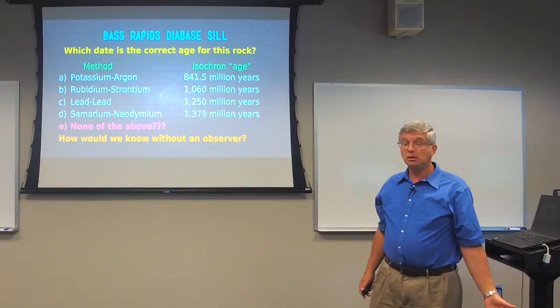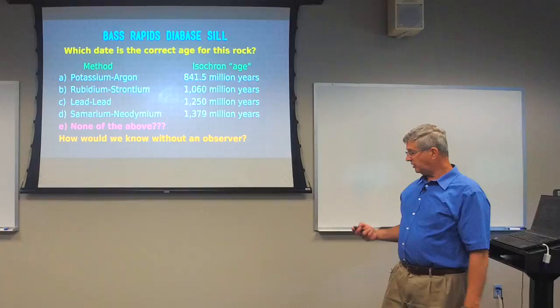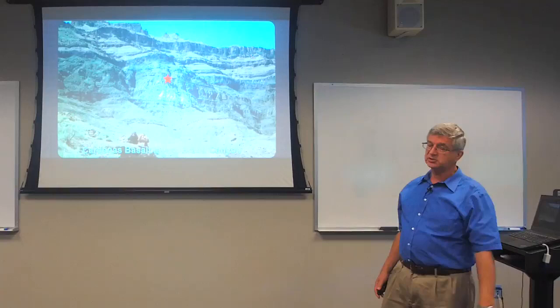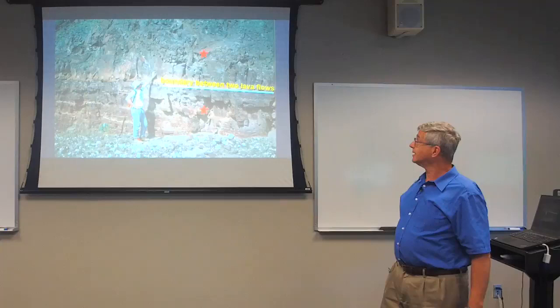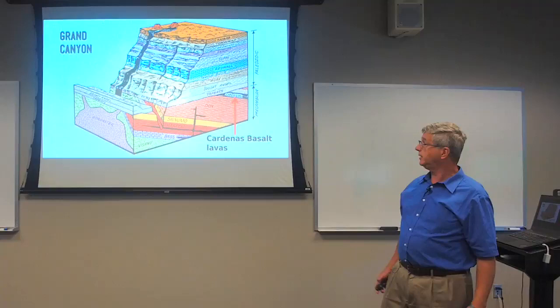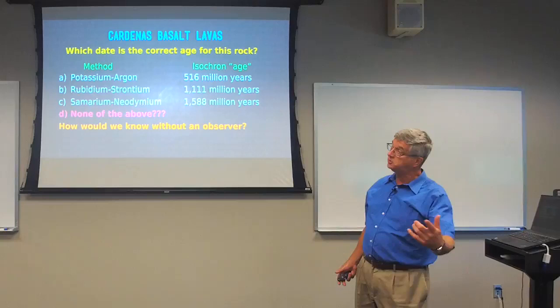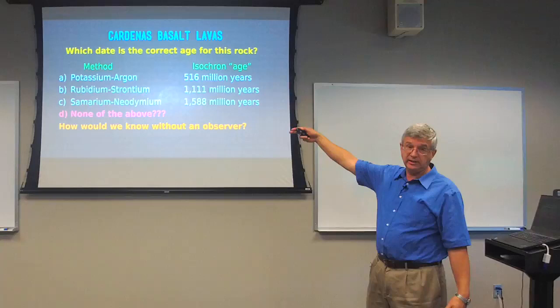Moving on to the Cardenas basalt lava flows — a succession of about six or seven flows in the Precambrian. Here are the results: potassium-argon 516 million years, rubidium-strontium 1,111 million years, samarium-neodymium 1,508 million years. Again potassium is younger than rubidium. Notice that samarium gives an age three times the size of the potassium age — how accurate can that be? Which is the correct one? We can't know without an observer.